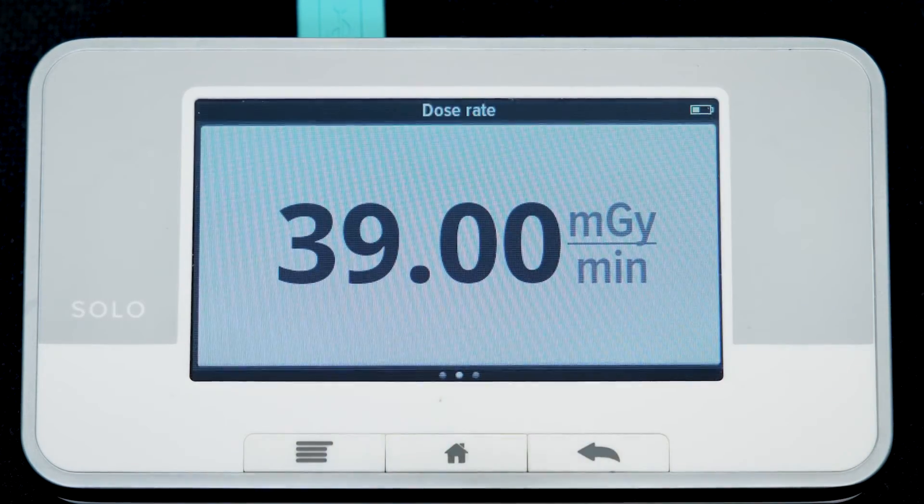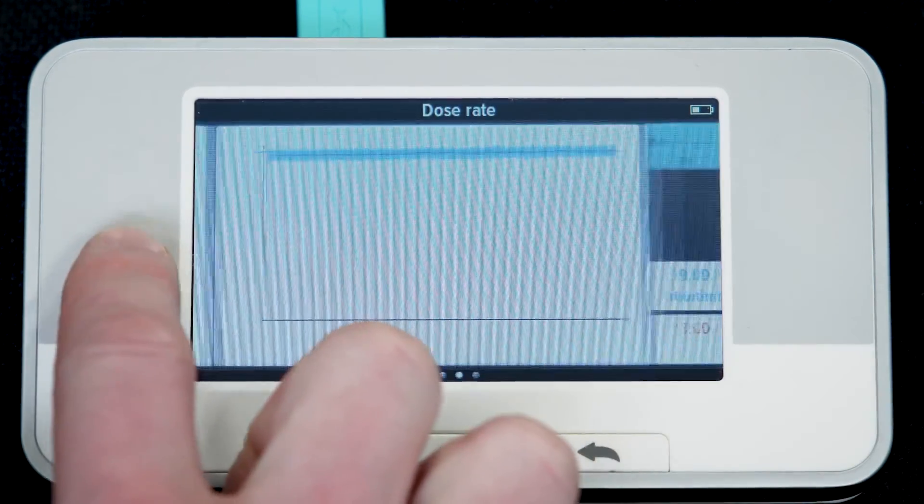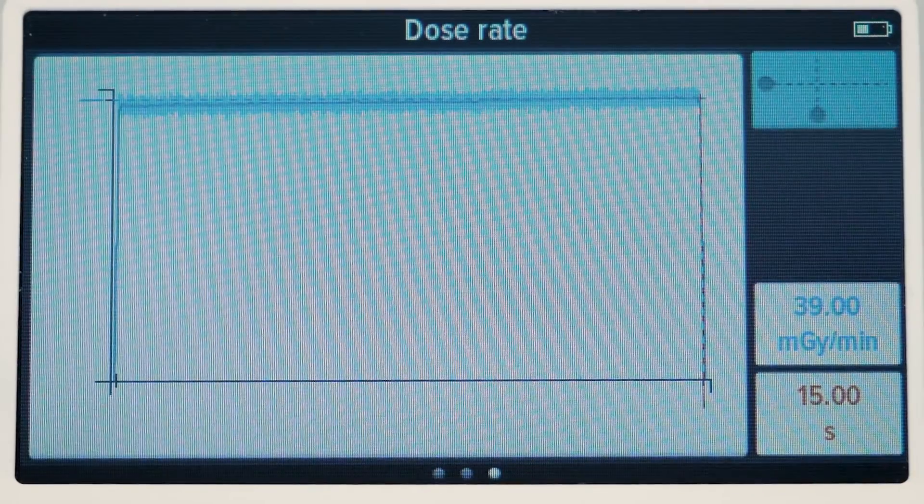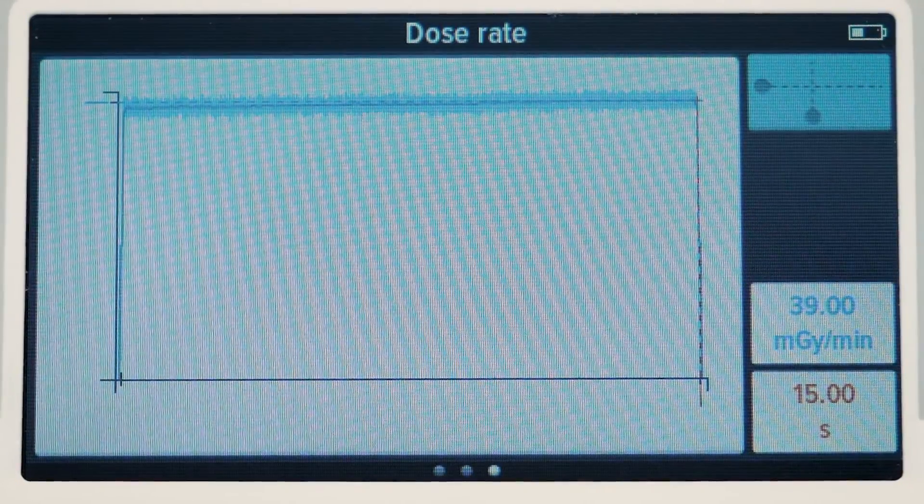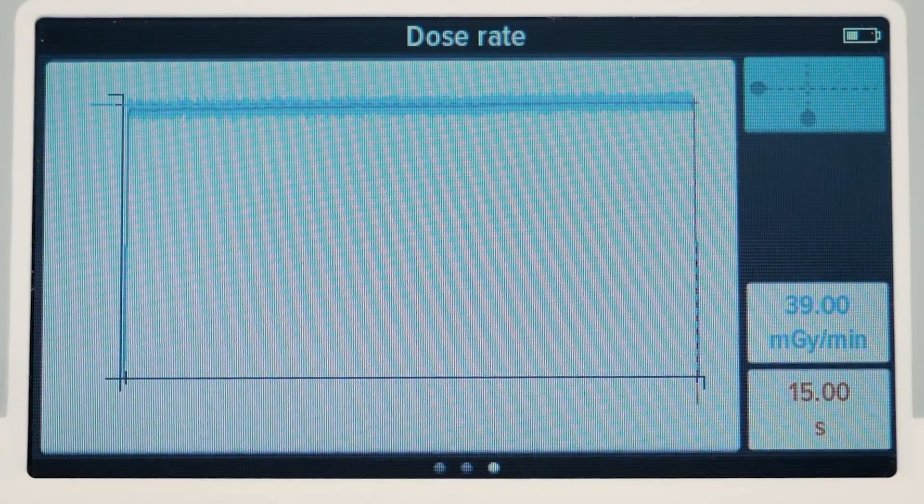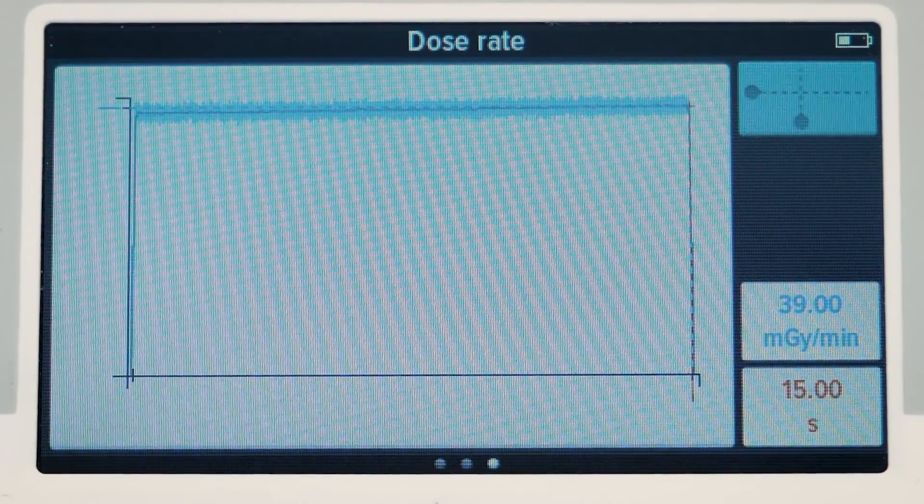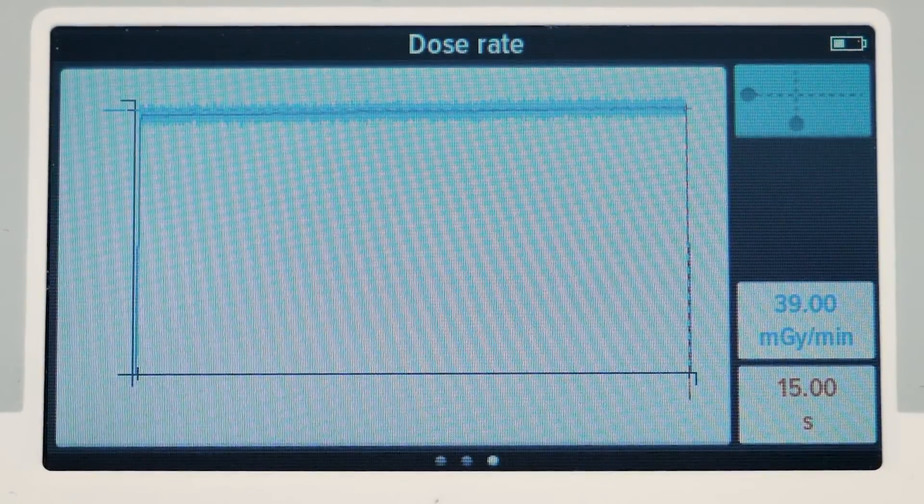If we take a closer look at the waveform, it now looks flat, which is good. A stable dose rate means that the sensor is correctly positioned in the center of the X-ray beam and it will measure the maximum dose. We can now trust our readings from the instrument.